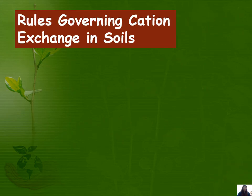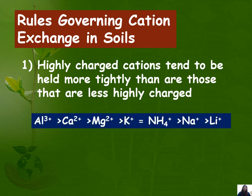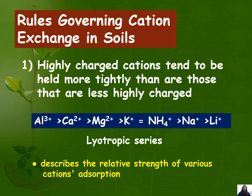Now let's look at the rules governing cation exchange in soils. For rule number 1, highly charged cations tend to be held more tightly than those that are less highly charged. This follows the lyotropic series, which describes the relative strength of various cations' adsorption. In the lyotropic series, those cations with a high charge are more tightly held — for example, Al³⁺ is more tightly held than Ca²⁺ and Mg²⁺, which are more tightly held than K⁺, NH₄⁺, Na⁺, and H⁺.